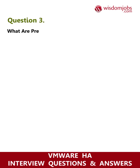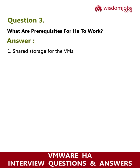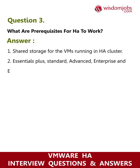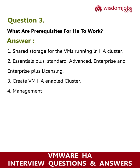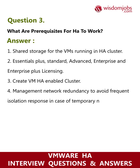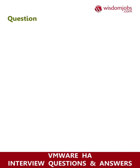Question 3: What are the prerequisites for HA to work? Answer: 1) Shared storage for the VMs running in the HA cluster. 2) Essentials Plus, Standard, Advanced, Enterprise, and Enterprise Plus licensing. 3) Create a VMware HA-enabled cluster. 4) Management network redundancy to avoid frequent isolation response in case of temporary network issues.